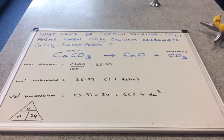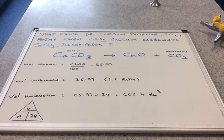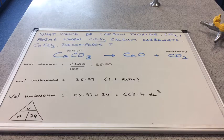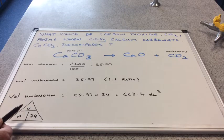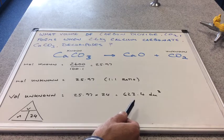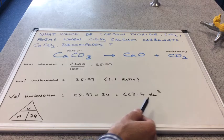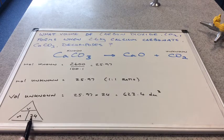And to work out the volume, remember this is a volume question now, not a mass question, to work out the volume of the unknown, we use the volume triangle. So V equals moles times 24, and you can see that's coming out at 623.4 decimeters cubed, because we multiplied by 24.